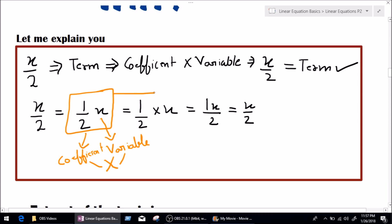That gives out that it is a term. By that, I mean just one term. So, now we know x over 2 equal 1 over 2 multiply x.